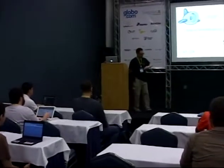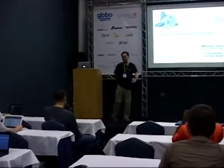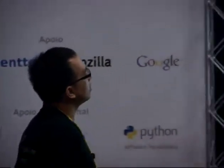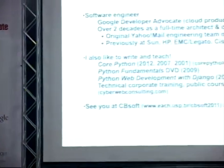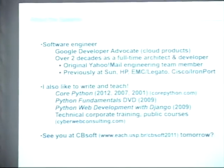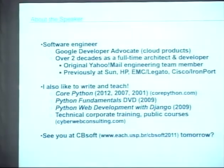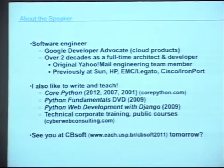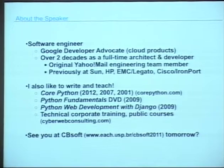I only have half an hour, so I have 50 slides, so let's get going. Follow along. So who am I? I'm a developer advocate at Google representing Cloud products. App Engine is only one Cloud product — we have a few more and you'll hear about that in the talk. I've been a software engineer for over 20 years, and I've worked at some big companies. I like to write, I like to teach.